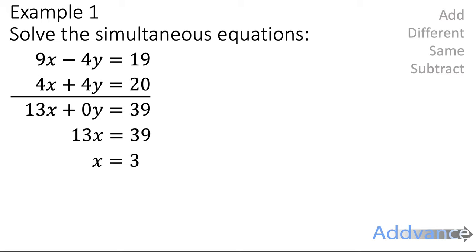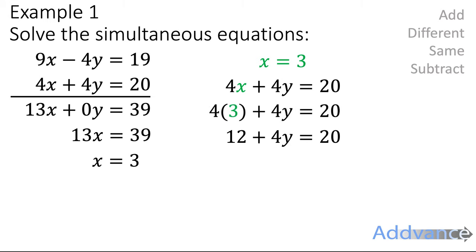We can use that to find the y. So we're going to take one of the equations, doesn't matter which one, and we're going to substitute the x in. We know that x equals 3, so we're going to replace the x with 3. 4 times 3 plus 4y equals 20. 4 times 3 is 12. We take 12 off both sides. So we're just rearranging this equation to find the y now. And we get 4y equals 8. Divide by 4, and we get y is 2. Okay, so I'm just solving this equation now. Now I know that 12 plus 4y equals 20. I rearrange and then solve that and get that y equals 2. And now I know that x equals 3 and y equals 2.